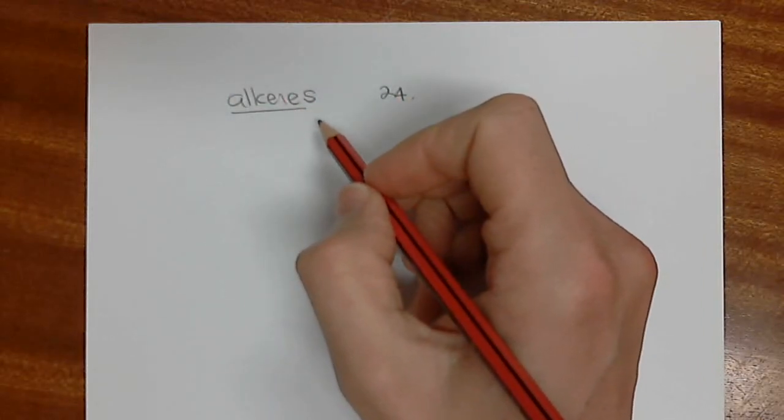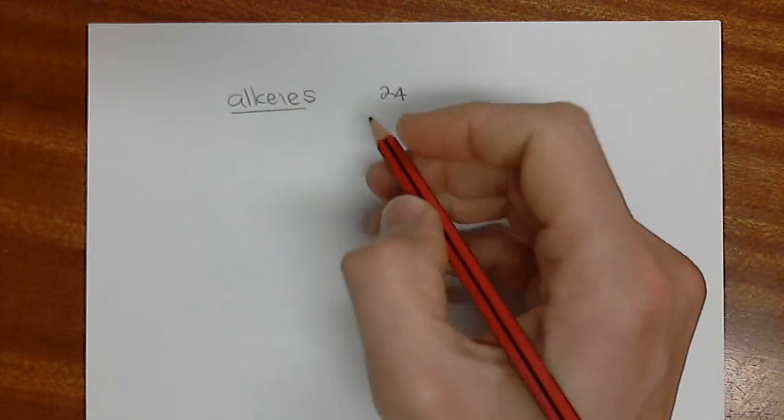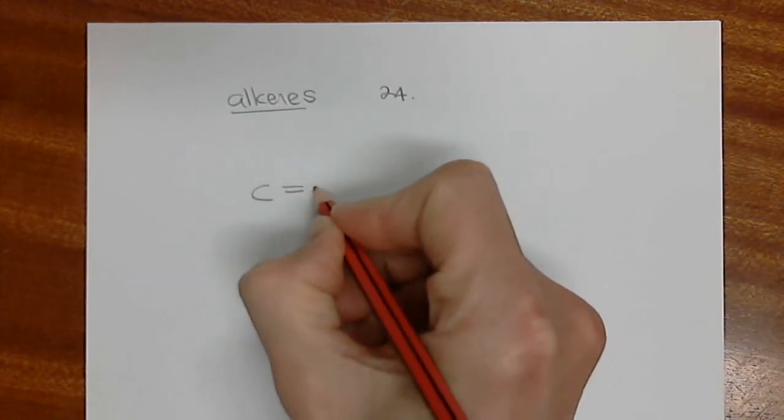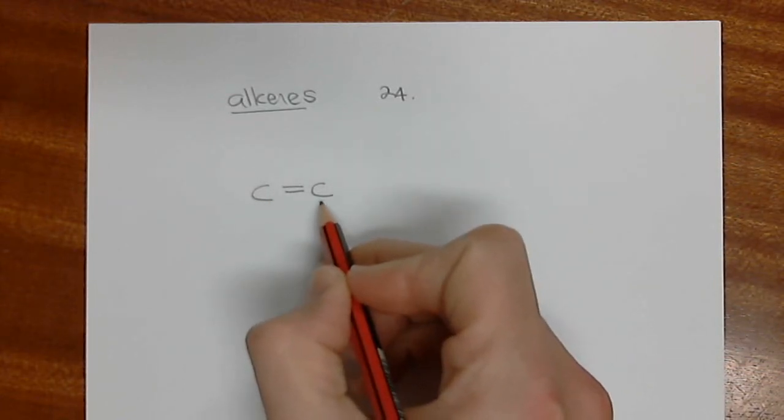This section is one of the interesting sections in the sense that alkenes are our first type of functional group. And an alkene is a carbon that is double bonded to another carbon. I'm going to deal with this in a little bit more detail now.